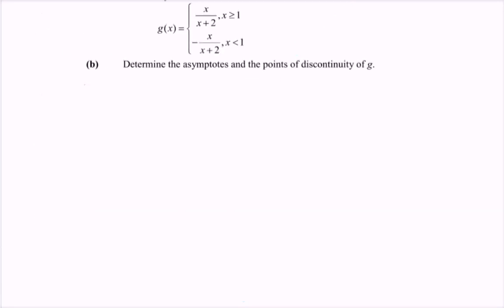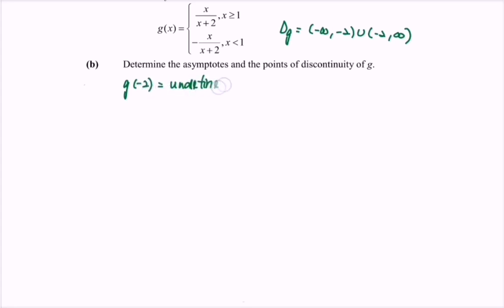Now we discuss the discontinuity of g. The domain of g is negative infinity to negative 2, union negative 2 to positive infinity, meaning we cannot substitute x equals negative 2. Therefore, g(negative 2) is undefined. Since the first condition for continuity fails, we conclude that g(x) is discontinuous at x equals negative 2.